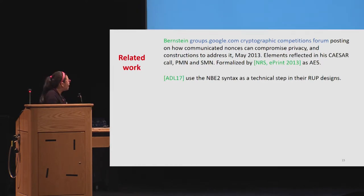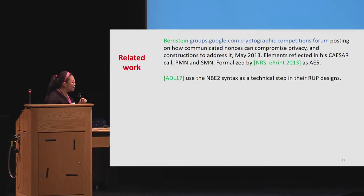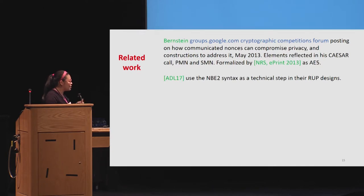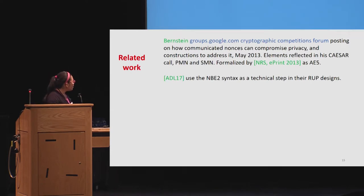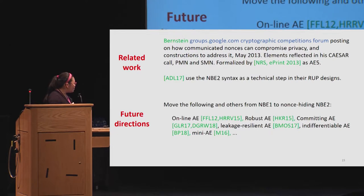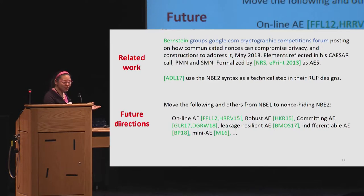We're not alone in pointing out this issue. Shortly after our paper was published, Dan Bernstein told us he was concerned about similar issues when writing the call for CAESAR. This was reflected in CAESAR, which has a public message number and a secret message number. This was also formalized as AE5, though different from our formalization. Atoll, Dunkelman, and Lux use the NBE2 syntax to achieve RUP, which is also relevant. We think a future direction would be to extend our syntax to other interesting kinds of AE and see if sending nonces in the clear causes problems there too.